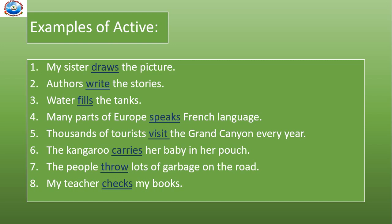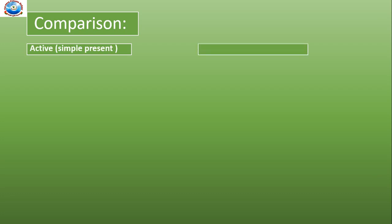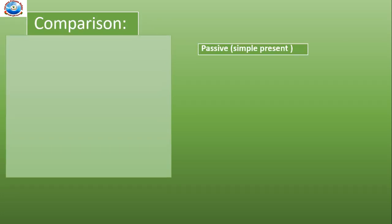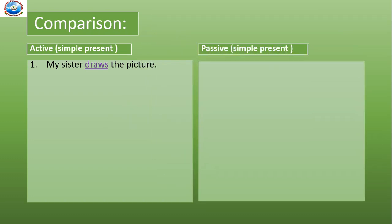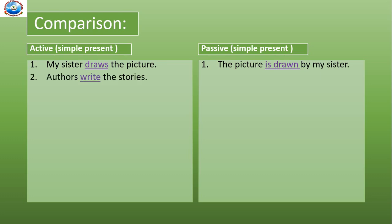Now let us compare the active and passive sentences and get a more clear picture of the language structure. Active: My sister draws the picture. The same in passive will be: The picture is drawn by my sister. See the same sentence in active and passive how it will come. Number two — active: Authors write the stories. Passive: Stories are written by authors.